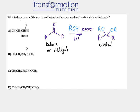An acetal product is where the carbon that used to have a double bond O — that carbon — replaces its double bond O. We no longer see the double bond O; instead we have two OR groups that came from our excess alcohol.